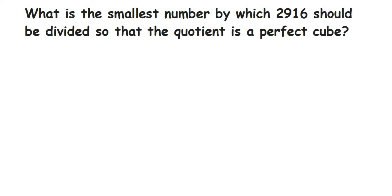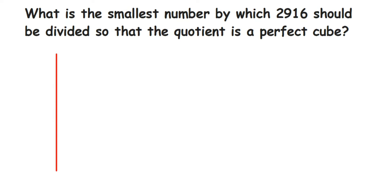Here's a question: what is the smallest number by which 2916 should be divided so that the quotient is a perfect cube? This number 2916 is not a perfect cube. We have to make it a perfect cube by dividing with the smallest number. Whenever they ask this type of question — smallest number to be divided or multiplied — you always use the division method. We're going to first find the prime factors of this number by doing prime factorization.